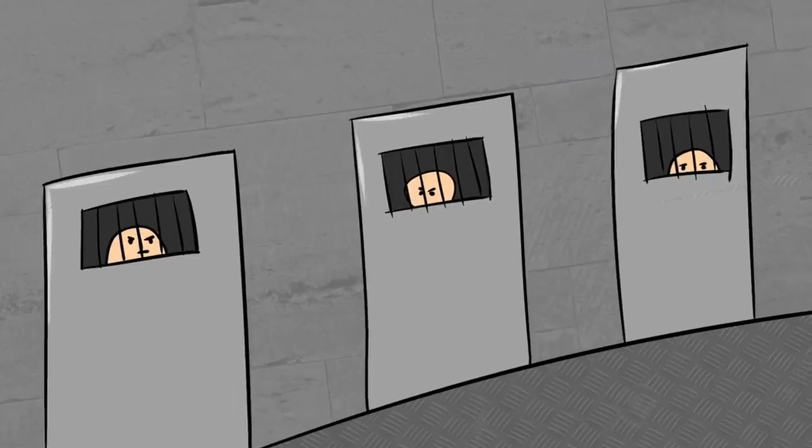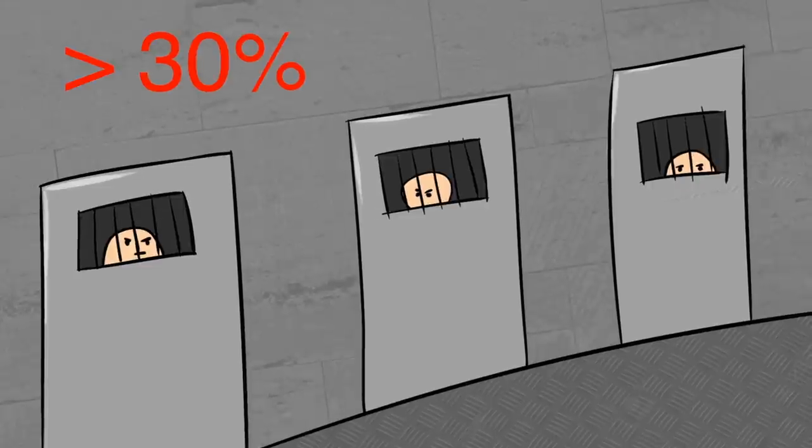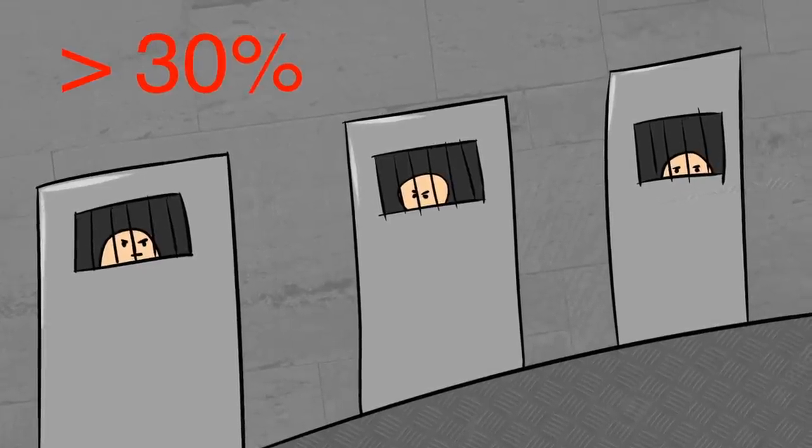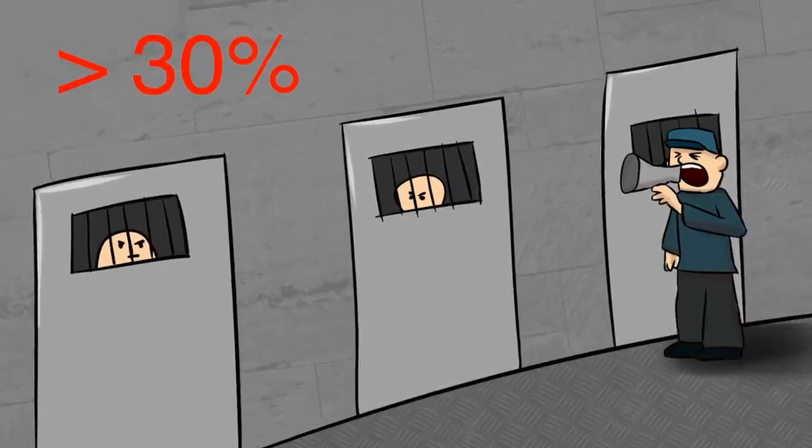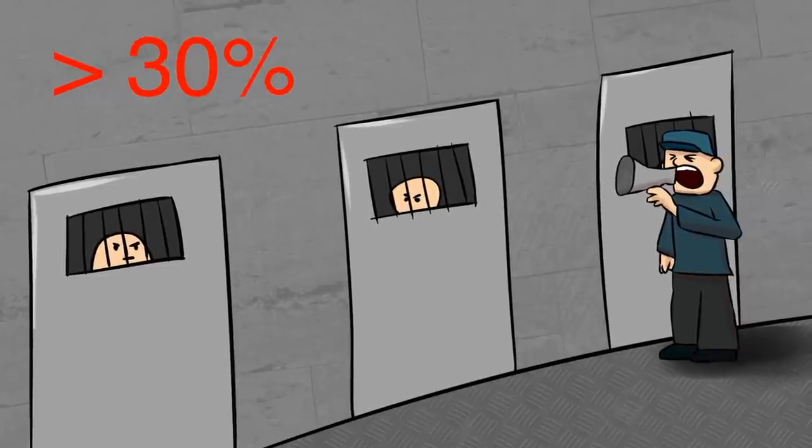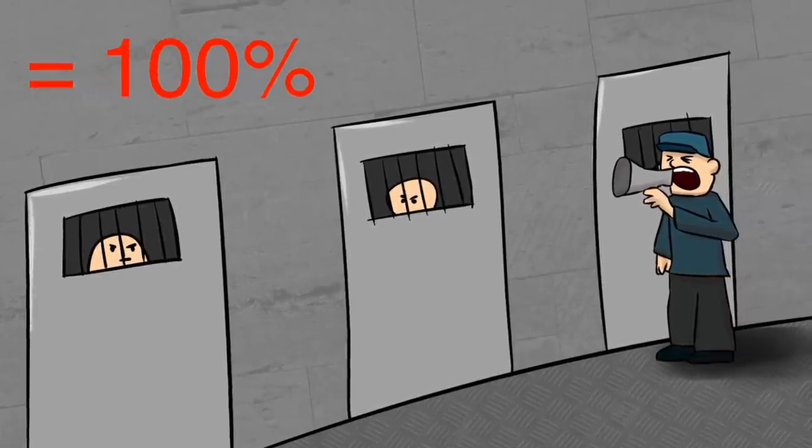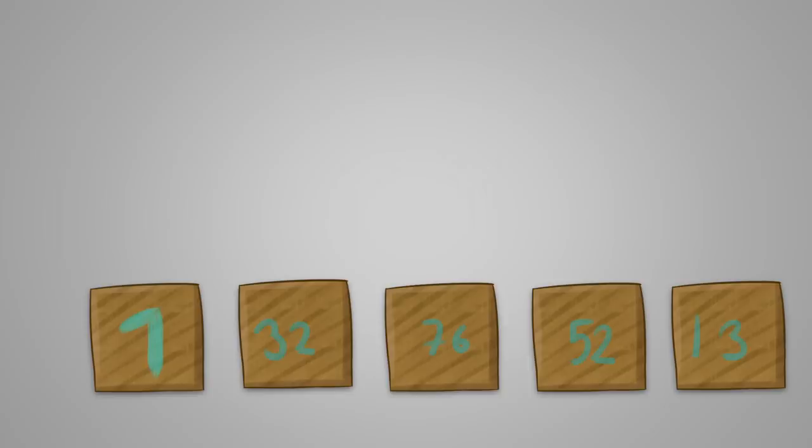This strategy by itself already has a greater than 30% chance that everybody will find their name. And because the warden allowed prisoner 1 to open all 100 boxes and swap two names, success can be guaranteed.